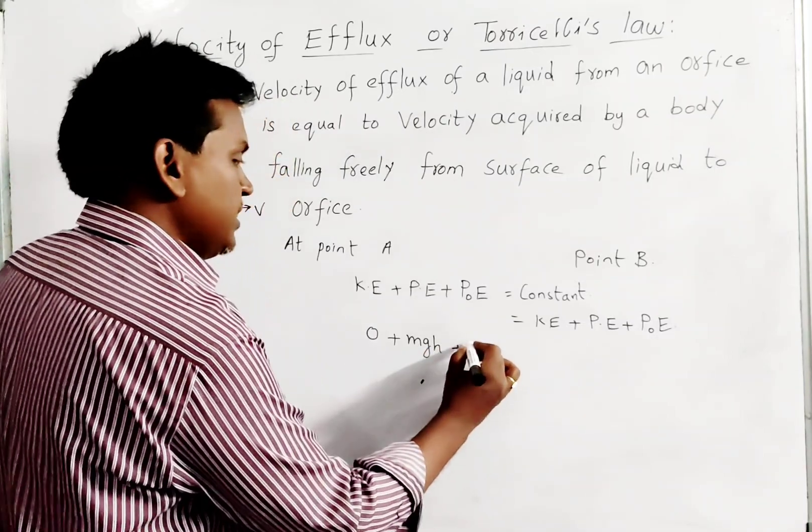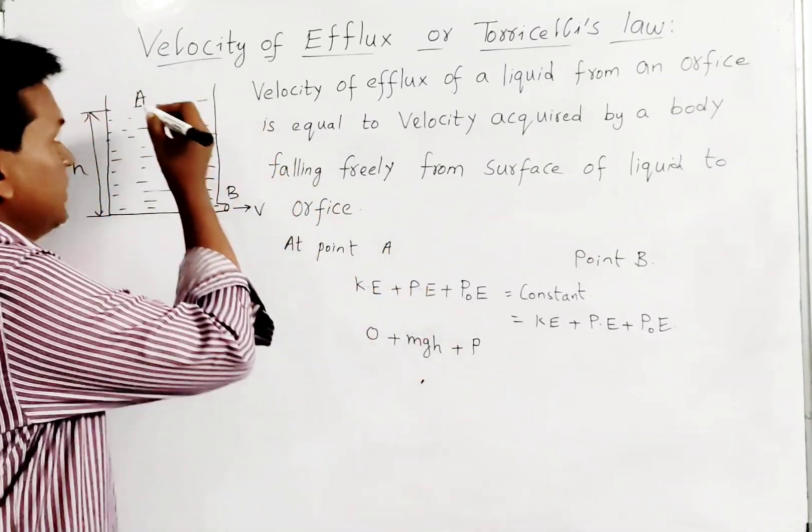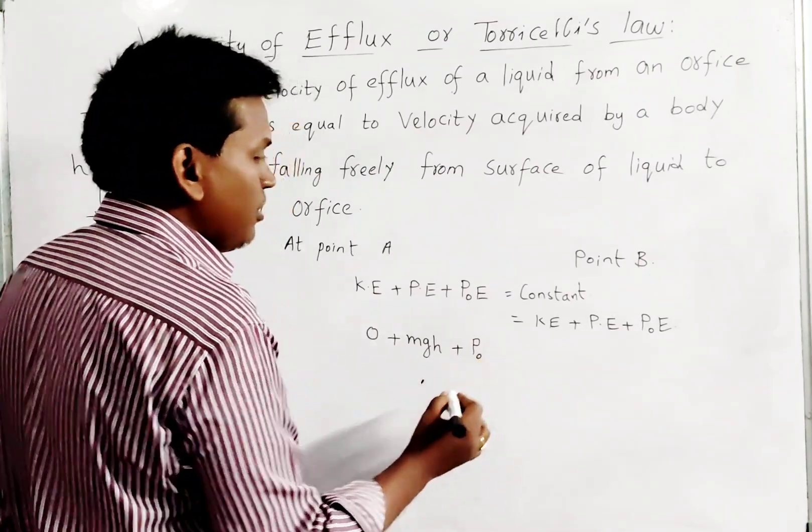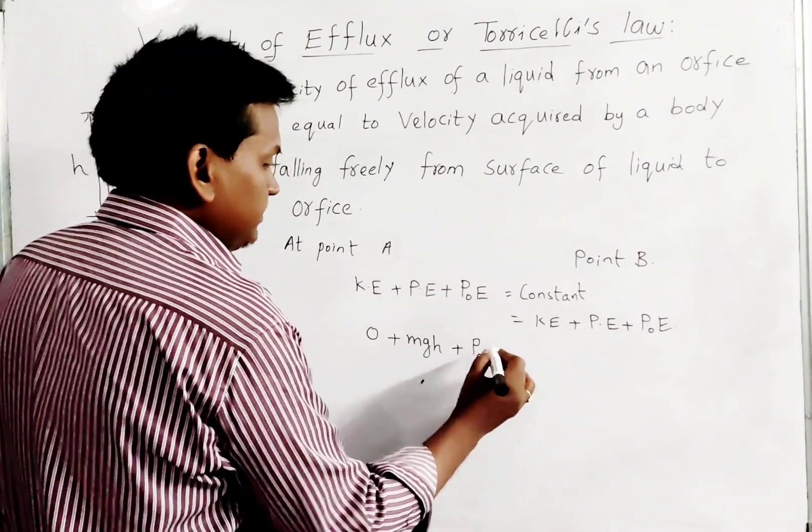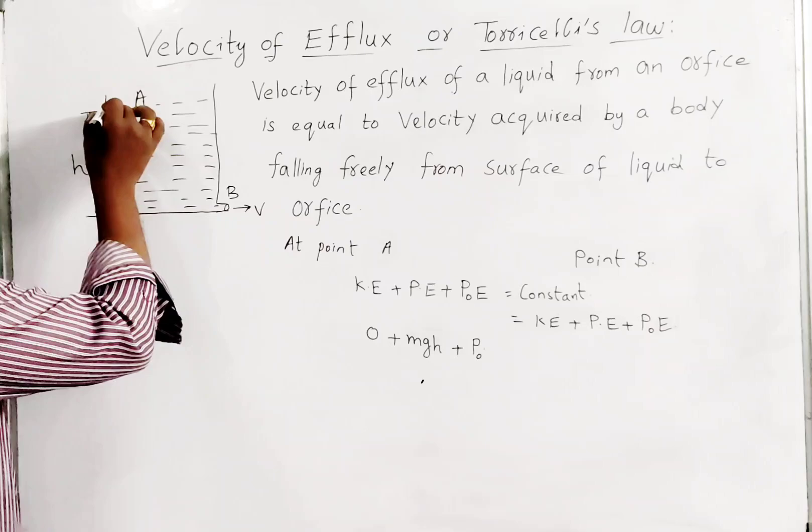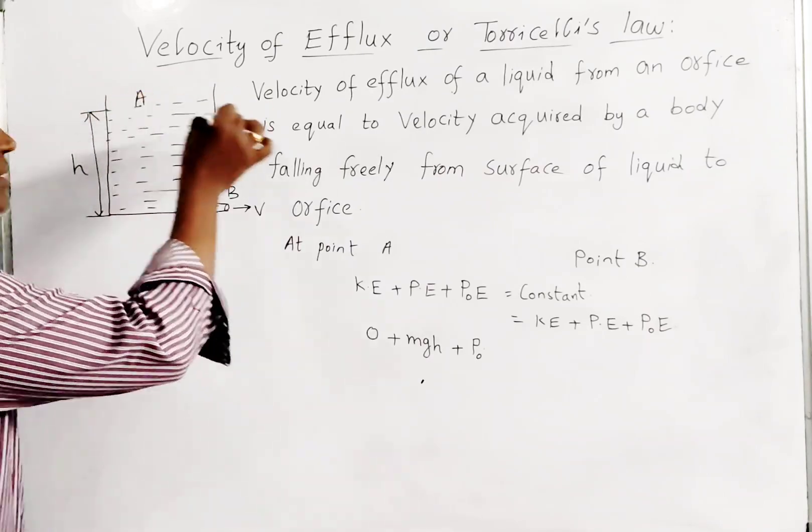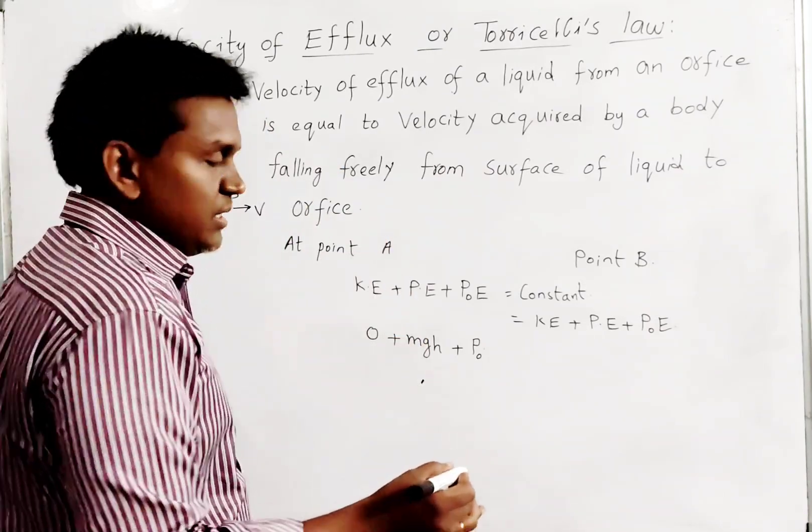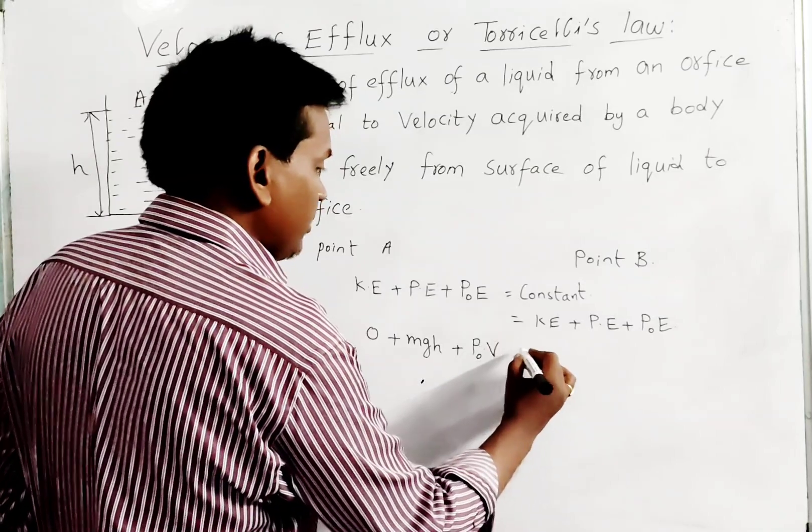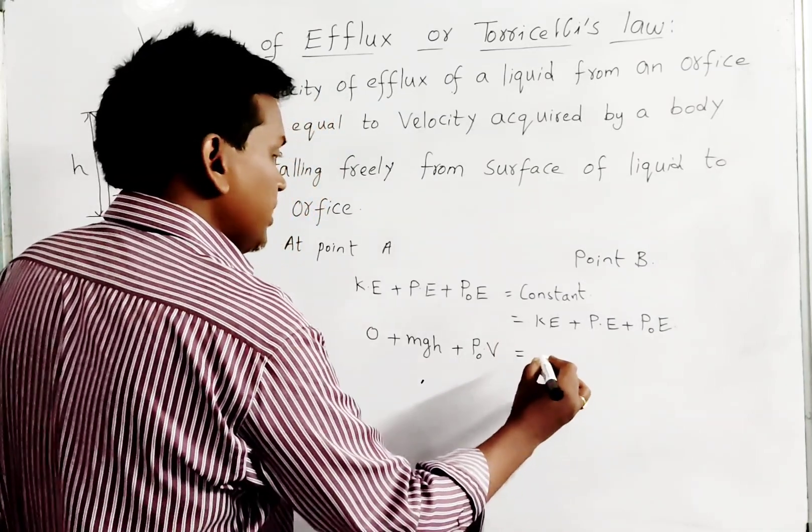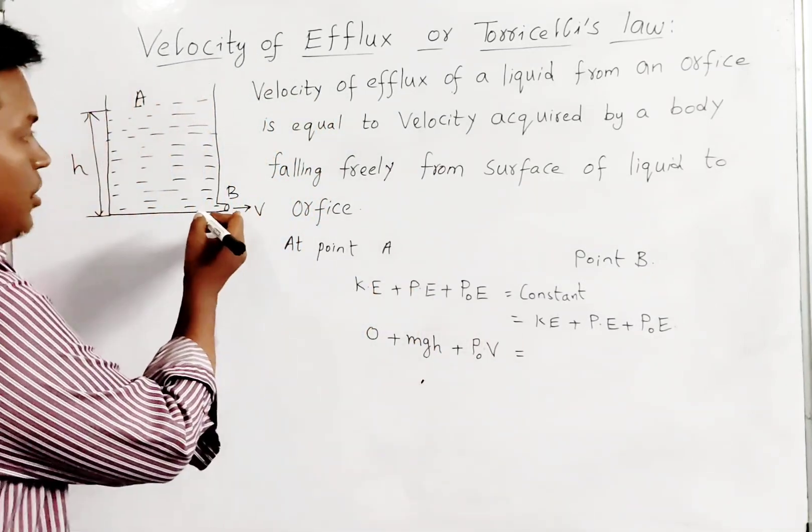Pressure energy: the pressure at the surface is atmospheric pressure P₀. This is having some volume, on that volume pressure atmospheric pressure is applied, so P₀V. That is equal to, now consider point B.